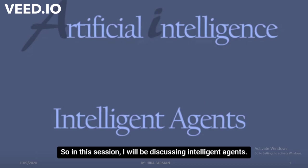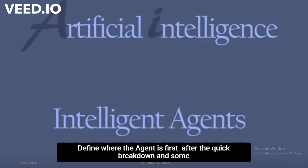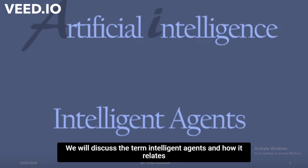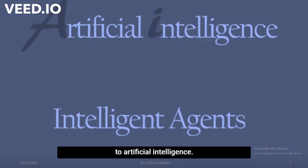In this section, I will be discussing intelligent agents. But before I speak further on this topic, I think I should define what an agent is first — a quick breakdown and some examples of the term agent. We will discuss the term intelligent agents and how it relates to artificial intelligence.